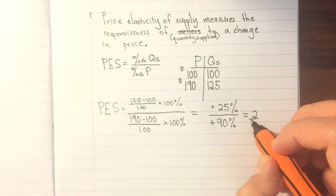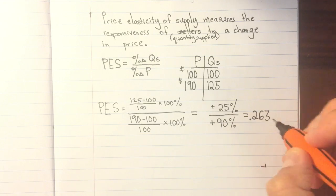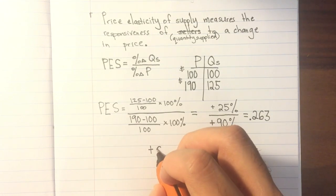The two things we want to pay attention to are the fact that it's positive, which PES is pretty much always going to be, because price and quantity supplied move in the same direction.